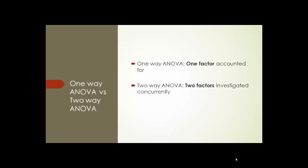A one-way ANOVA involves one factor accounted for, while a two-way ANOVA accounts for two factors being investigated concurrently.